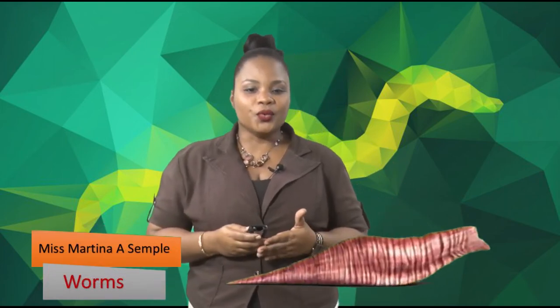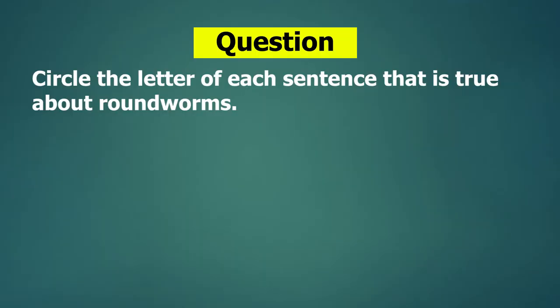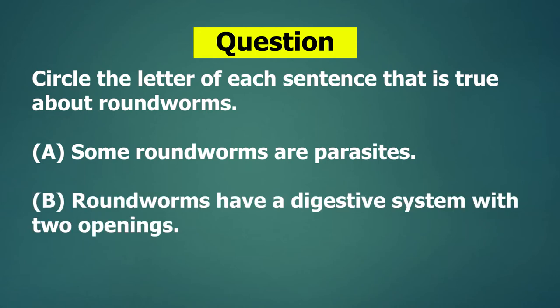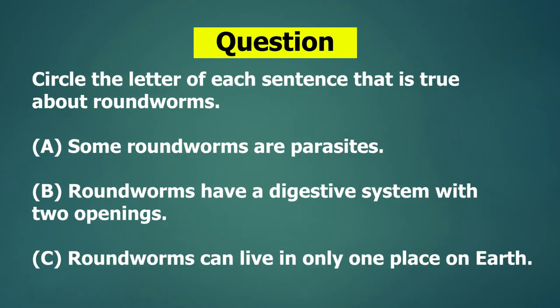Question 7: what is true about roundworms? A — some roundworms are parasites; B — roundworms have a digestive system with two openings; C — roundworms can live in only one place on earth. Circle the correct answer.